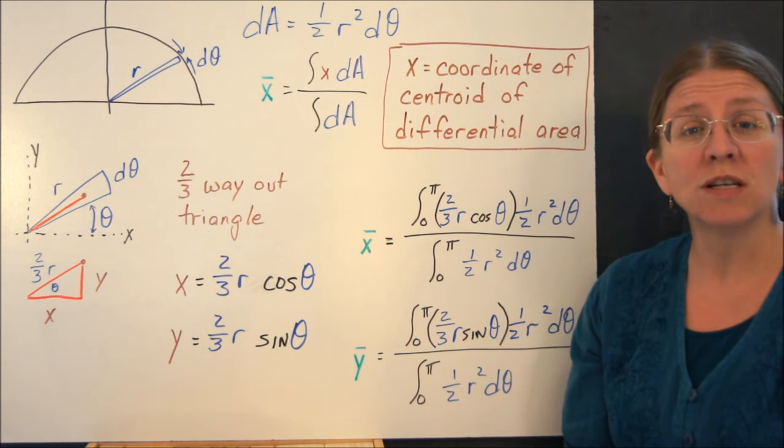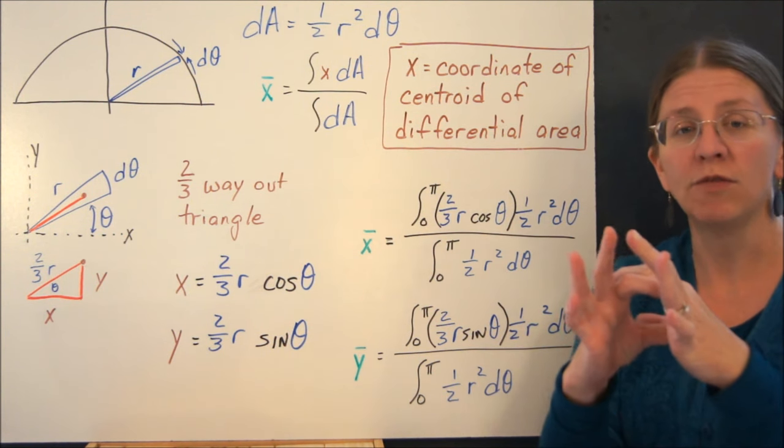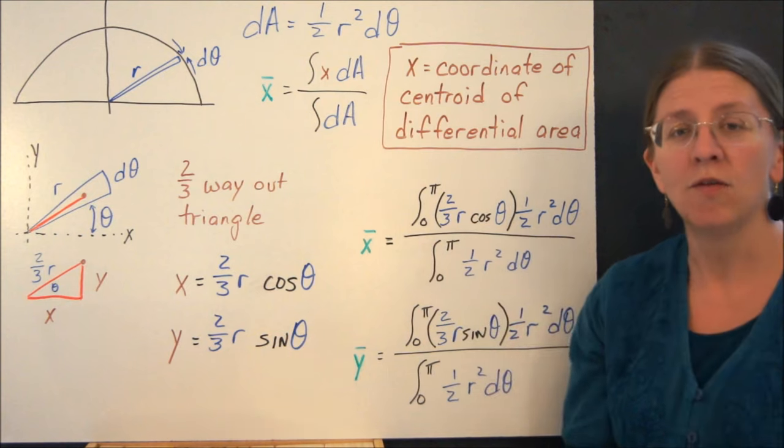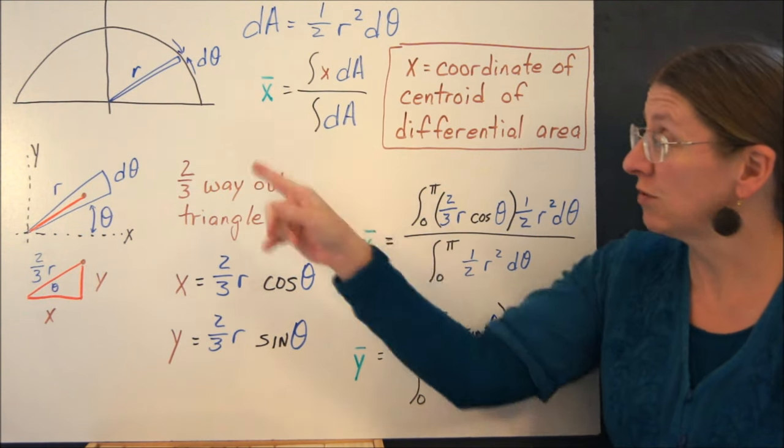So the next question to think about is, what does a differential area look like if you wanted to do dr? Well, then you'd have concentric rings as you are going out. That also would work for this particular shape.